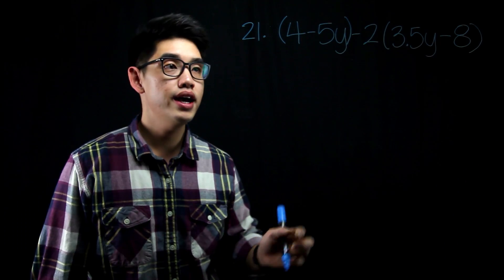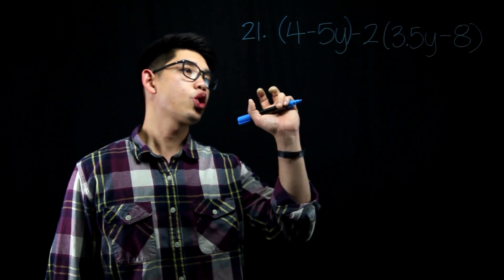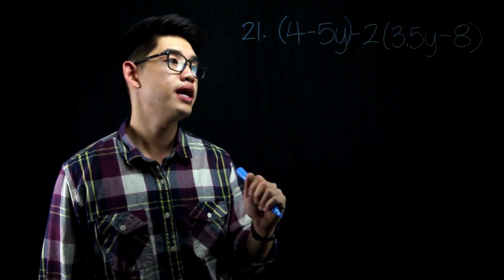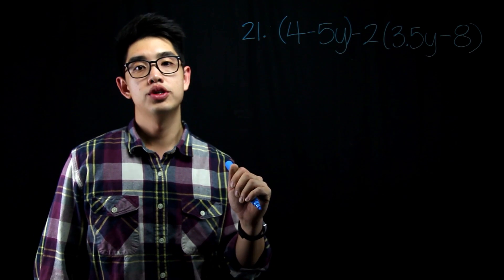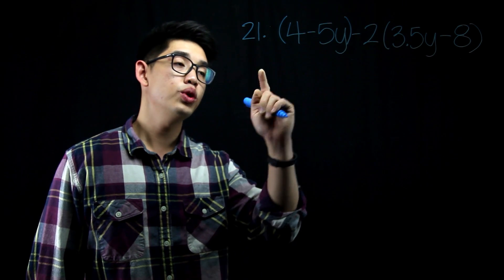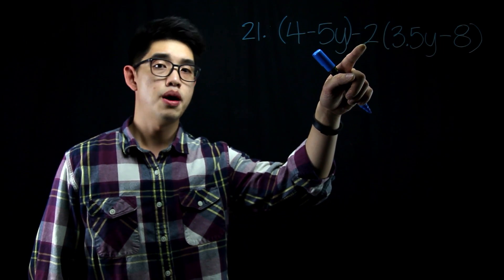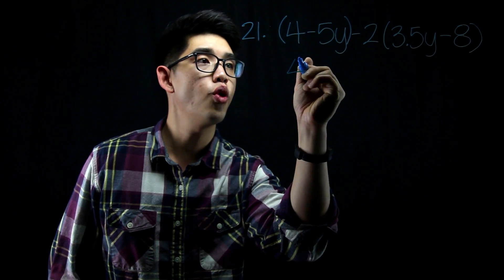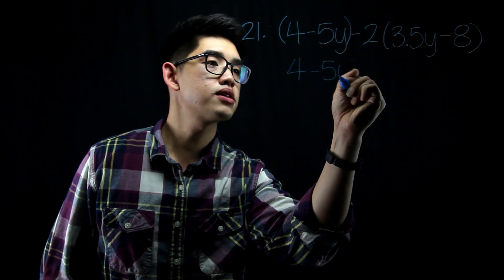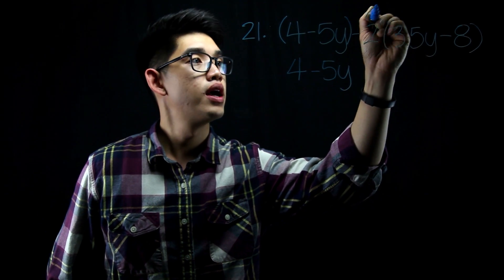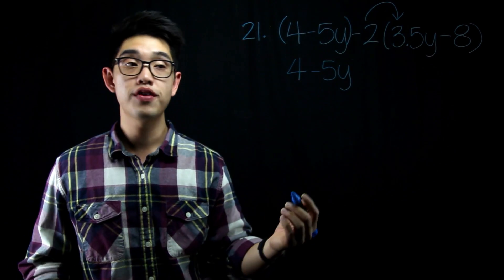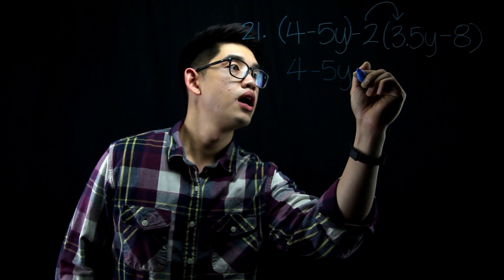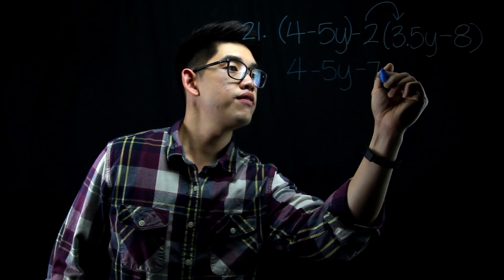For number 21, I have 4 minus 5y minus 2 times the quantity of 3.5y minus 8. Just like what we did last time, we need to distribute the negative number to this linear expression here. But first, I'm going to write 4 minus 5y. That's going to be the same. And then I'm going to distribute the negative 2. Negative 2 times 3.5y is going to be negative 7y.